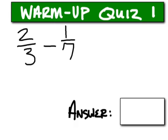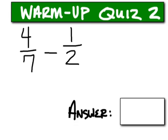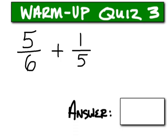The answer for number one should be 11 over 21. Number two, the answer for that one should be 114. Number three, the answer should be 31 over 30.